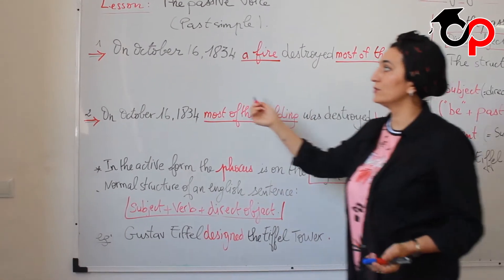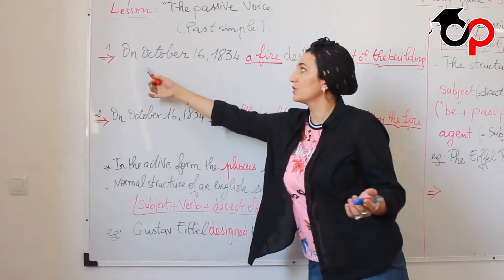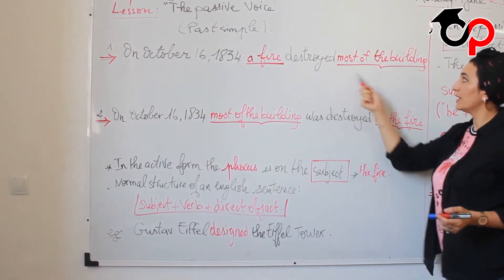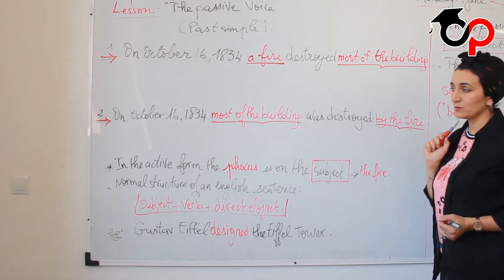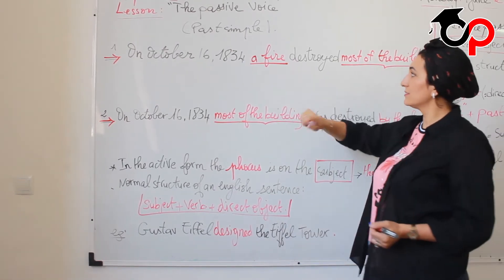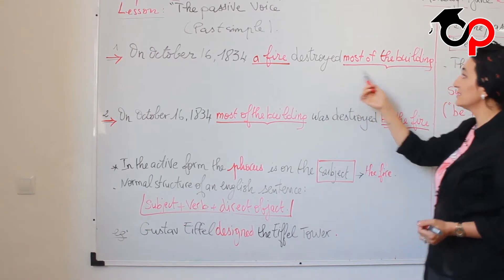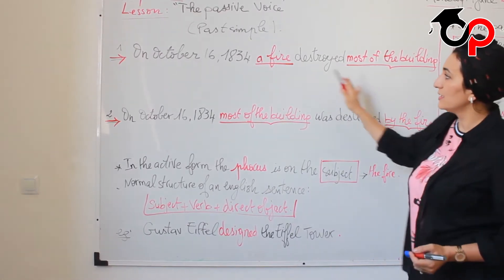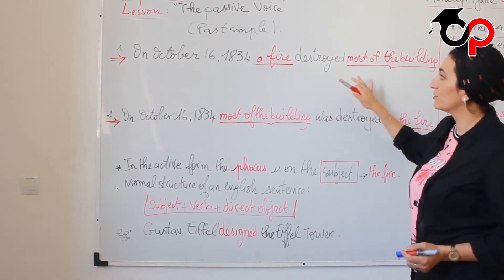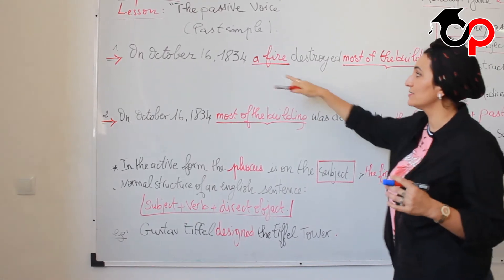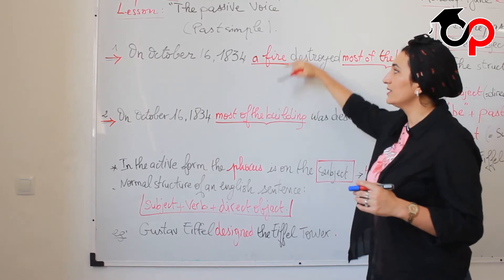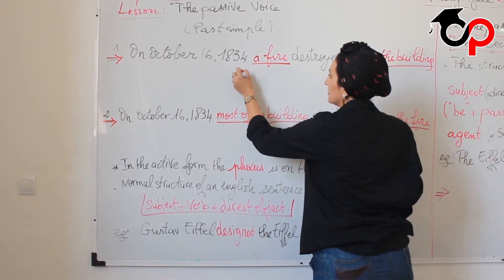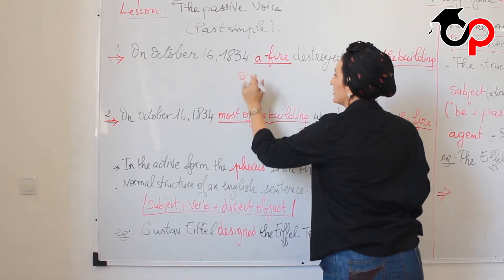In English we have a normal, usual structure. It starts with a subject, the verb, and a direct object. As you see in this sentence, the most important or the focus is on the fire. What is the fire here? The fire, as I said, is the subject.